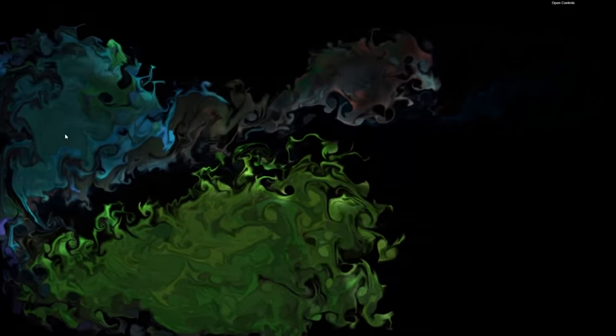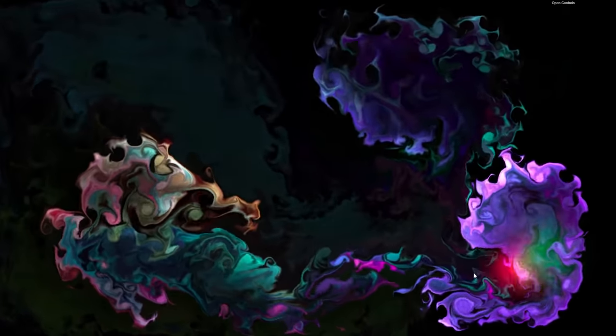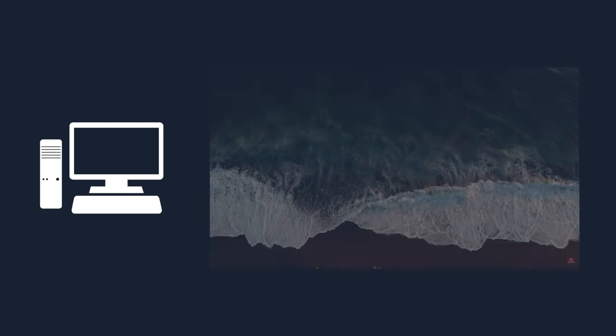Fluid simulations have always been one of the more fascinating programming feats to me. How on earth is it possible that a computer, with all its order, logic, and ones and zeros, can recreate the crashing waves, the rolling clouds, and the swirling smoke that we see in our daily lives—phenomena which seem characterized by randomness and chaos?